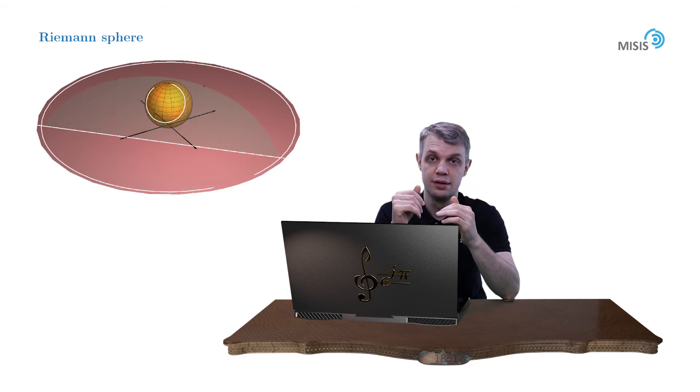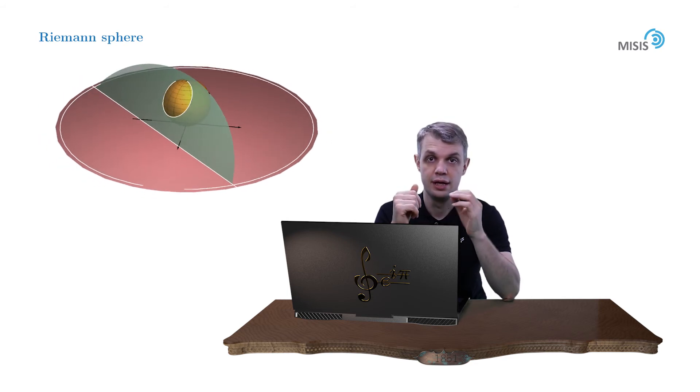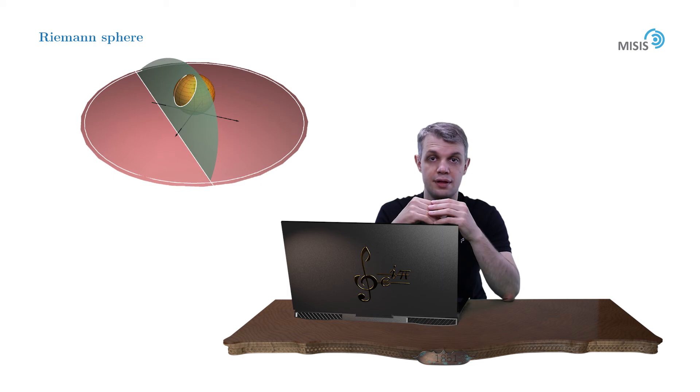Indeed, to see this, let's draw a plane through a line on a complex plane and a north pole of a sphere. Then the intersection of this plane with the Riemann sphere forms a projection of a line on a Riemann sphere. But on the other hand, the intersection of a plane with a sphere is always a circle.